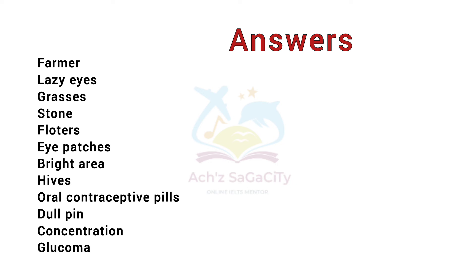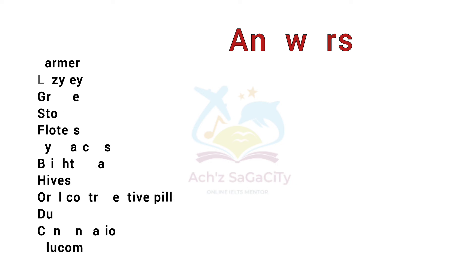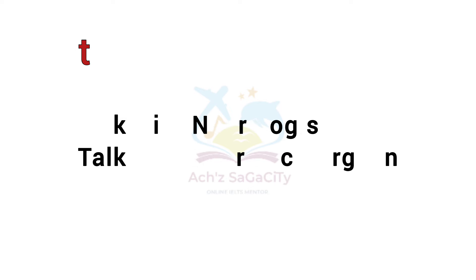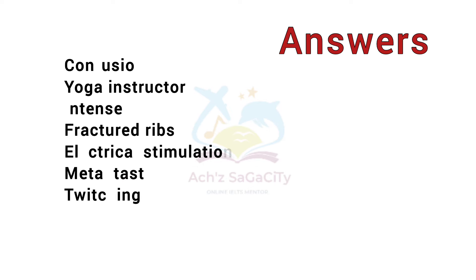If you have taken your exams, you can also comment your answers so others can share as well. Set two involved a talk with a neurologist and a talk with a thoracic surgeon. Answers shared by the students include: confusion, yoga instructor, intense, fractured ribs, electrical stimulation, metal taste, and tweeting. These were the answers shared by the students.